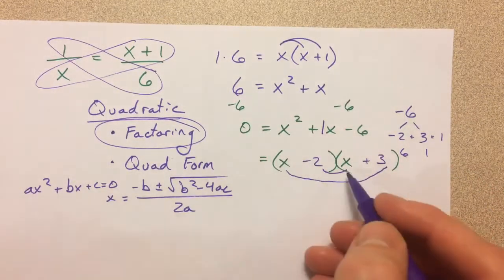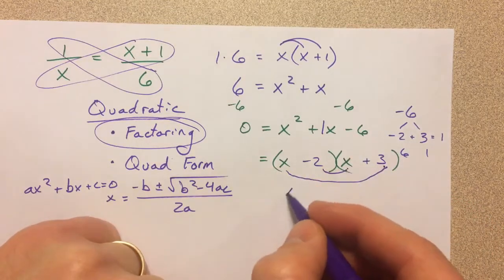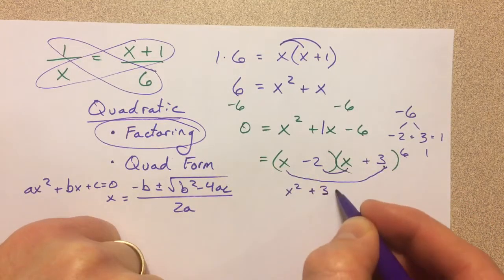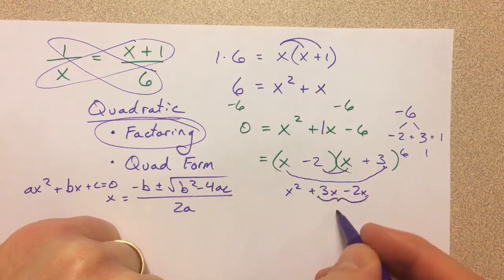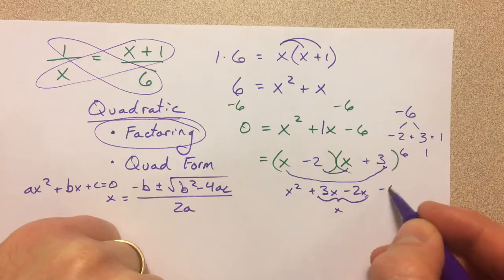Always good to double check. x squared, 3x, minus 2. And so these two together are getting our x term up here. And then negative 2 times 3 is a negative 6.